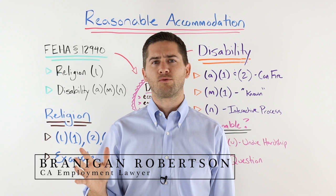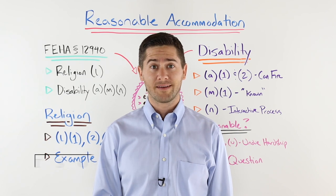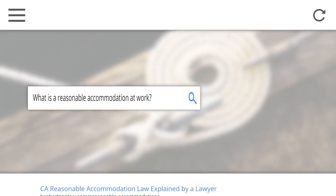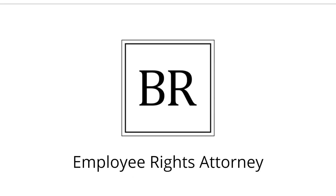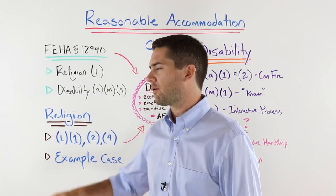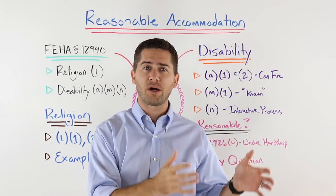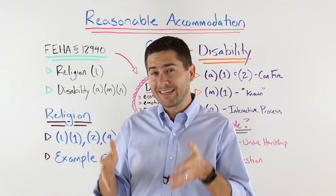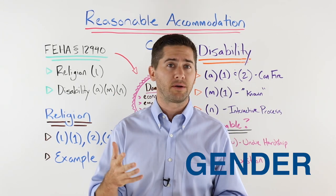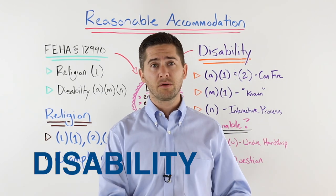Most California employees have heard about reasonable accommodations, but what are they? Who is entitled to them, and what can you win if your employer fails to give you one? Keep watching to find out some basics. The California Fair Employment and Housing Act prohibits employment discrimination. Section 12940(a) outlines a whole bunch of protected categories that companies are not allowed to fire people for — we've all heard about many of them: race, religion, sexual orientation, gender.